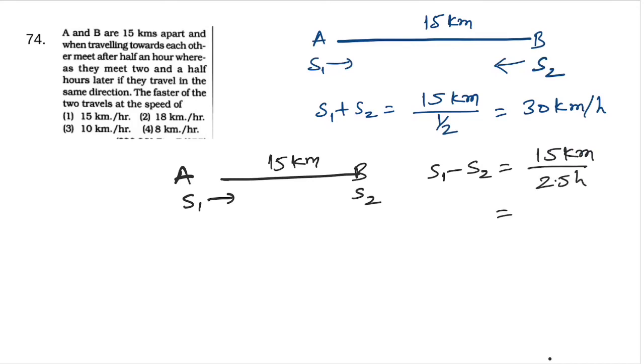We arrange this: 150 divided by 25 equals 6 km per hour. So S1 minus S2 equals 6. Now S1 plus S2 is 30.